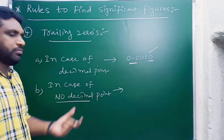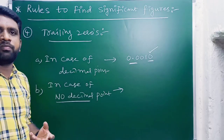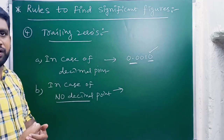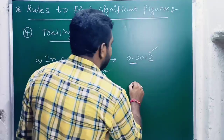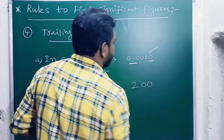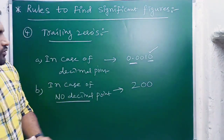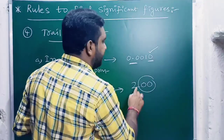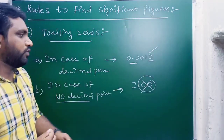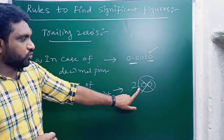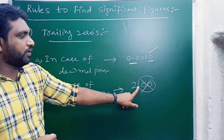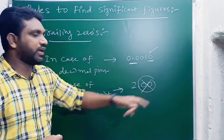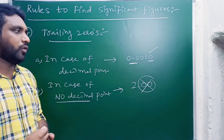In case there is no decimal point, all the trailing zeros are not considered as significant figures. For example, in 200, we do not have any decimal point, so the two trailing zeros are not significant. If a decimal point were present they would be considered, but without one they are not.